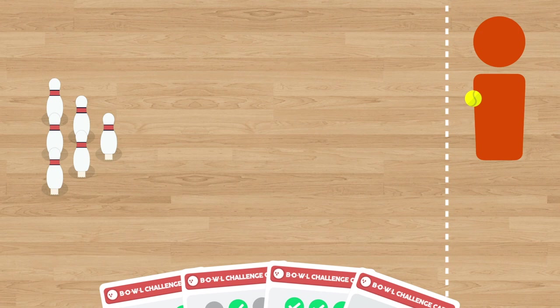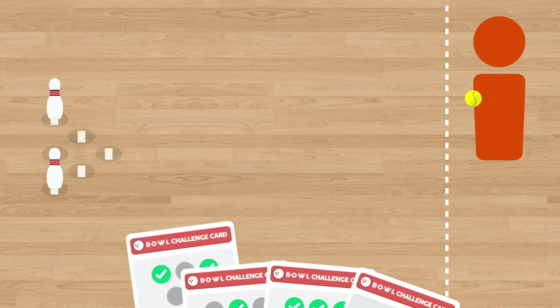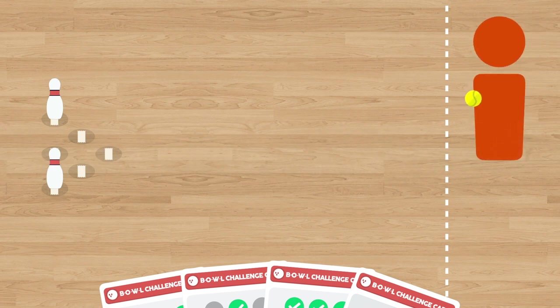Once you're ready, just shuffle up the playing cards deck and pick a card. Your challenge is to set up the pins as you see them on that card and start bowling until you're able to successfully knock over all of the pins in a single attempt.